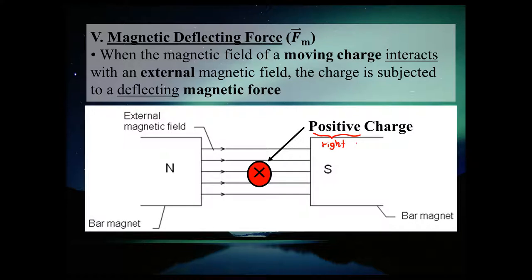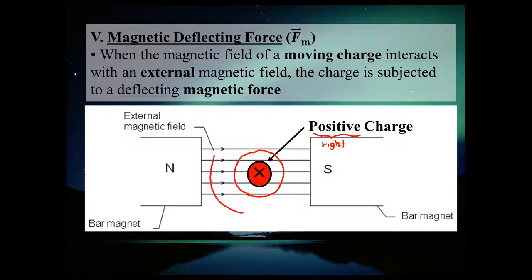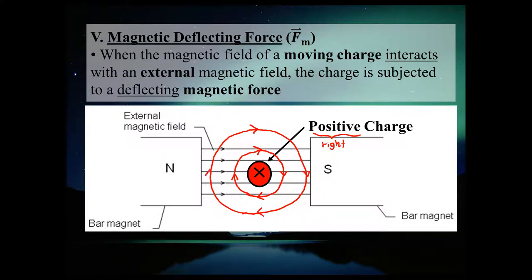Imagine that in the direction we're firing that charged particle, we have a long, straight, current-carrying wire directed into the page. If I asked you to draw the magnetic field lines surrounding that, you'd take your right hand, point your thumb in the direction of that current or direction the positive charge is moving — so your thumb points into the page — then look at the curl of your fingers. The curl of your fingers tells you the magnetic field direction is clockwise surrounding the wire.